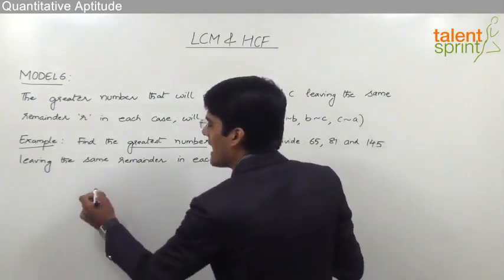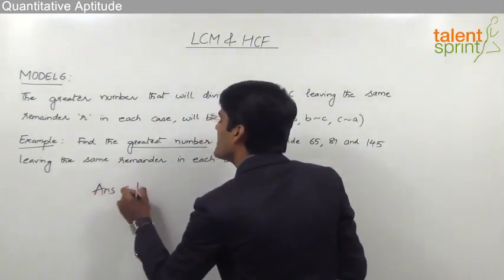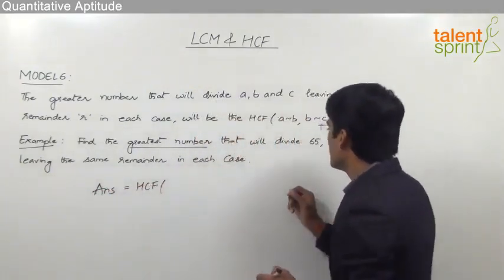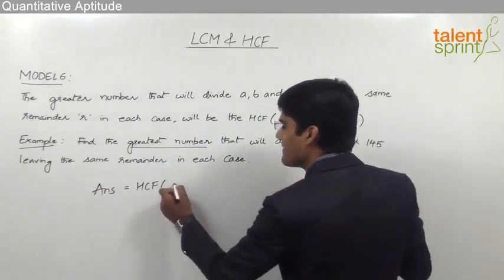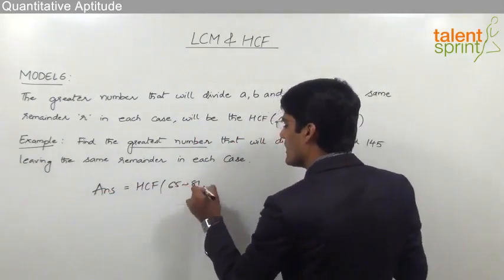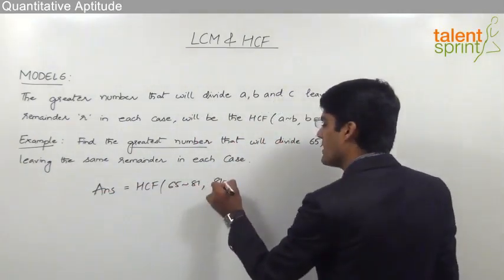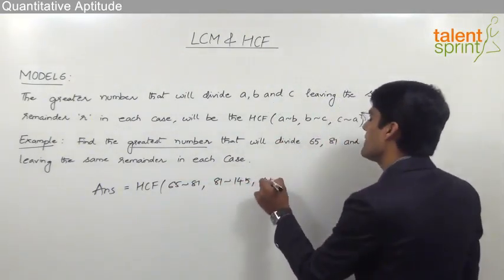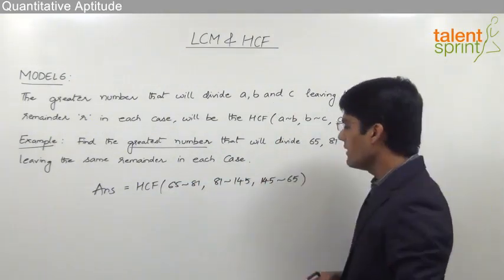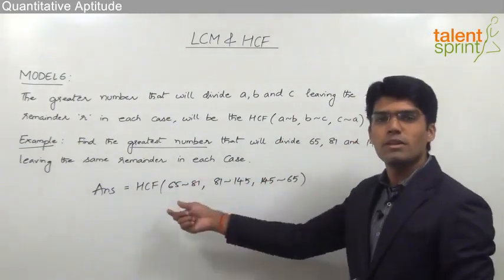Here we can say that the answer should be the highest common factor of the differences that we get out of these three numbers. That means the first difference is 65 difference 81, second one is 81 difference 145, and the third number should be 145 difference 65. A difference is nothing but the absolute value that we get by subtracting those two values.